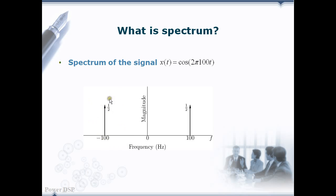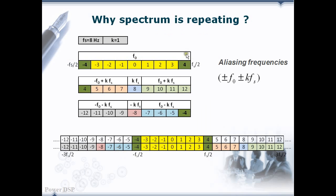Negative frequencies are just a mathematical resource for analysis and synthesis and not more than that. Let us stick with the same example that we saw in part 1. Here we can see the tabulation in which aliasing components are given for both positive and negative values of F0 and K, where K value is taken as 1.